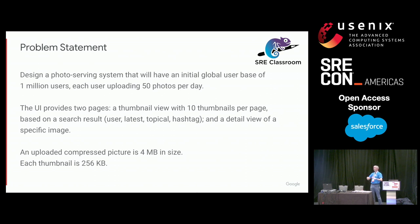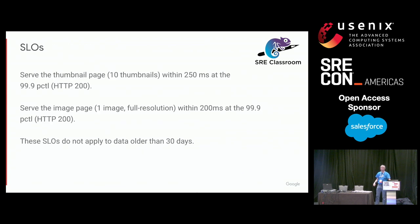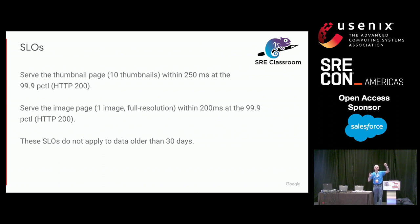People will not like it if the service is too slow. So we must set SLOs. The service level objectives are: we can serve the page with 10 thumbnails within 250 milliseconds at the 99.9th percentile. It's okay if 0.1% of traffic comes after 15 seconds, but hopefully not. The image page — the four megabyte full resolution photo — should be served within 200 milliseconds, also at the 99.9th percentile.